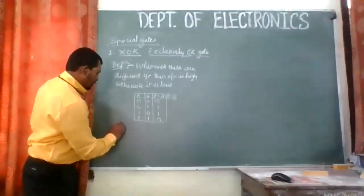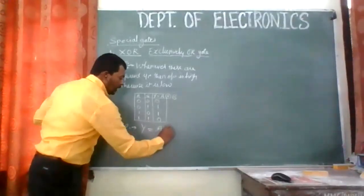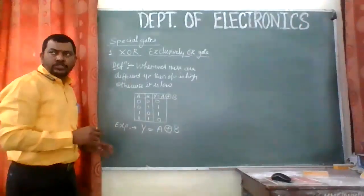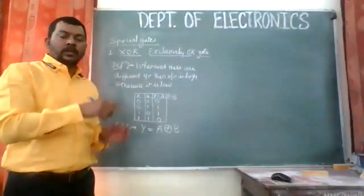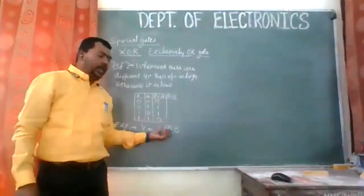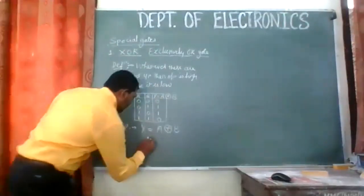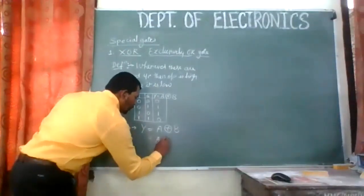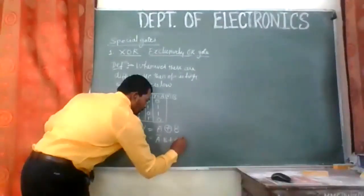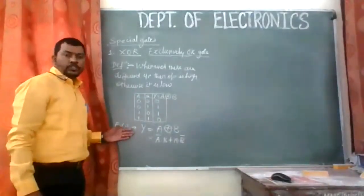The Boolean expression is Y = A XOR B, written as A with the circle-plus symbol and B. In detail, this can also be written as: Y = A̅·B + A·B̅. This is the basic expression for the XOR gate.